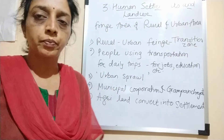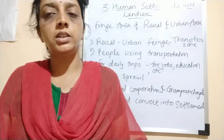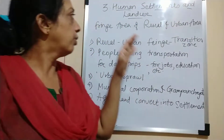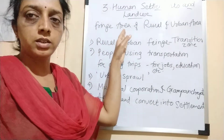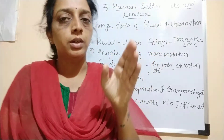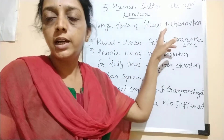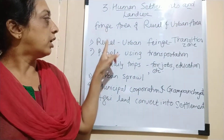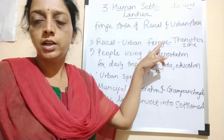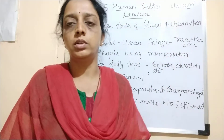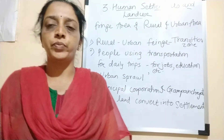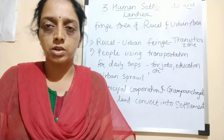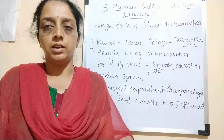Welcome students. We have learned about urban areas and rural areas. Now we are going to see the characteristics of fringe areas — that is, the region between an urban area and a rural area. This fringe area, the rural and urban fringe area, is a transition zone. A transition zone is an area where the rural area is changed into an urban area.